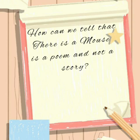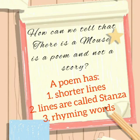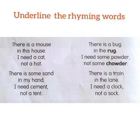We can tell that 'There is a Mouse' is a poem because a poem has shorter lines — lines are called stanzas — and it has rhyming words. A story has sentences and paragraphs, and the sentences are longer. We do not find rhyming words in stories. Now let's underline the rhyming words in this poem. A group of four lines is called a stanza.